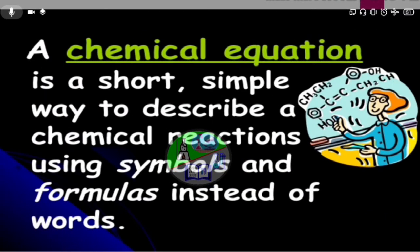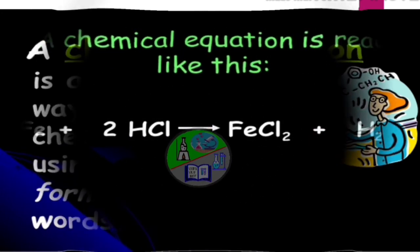But how can we describe the chemical reaction? A chemical equation is a short, simple way to describe a chemical reaction using symbols and formulas instead of words.